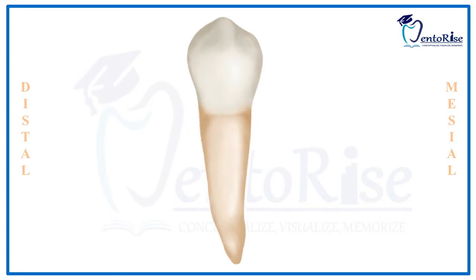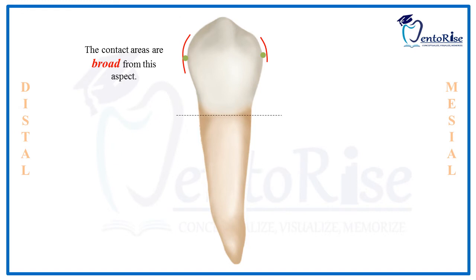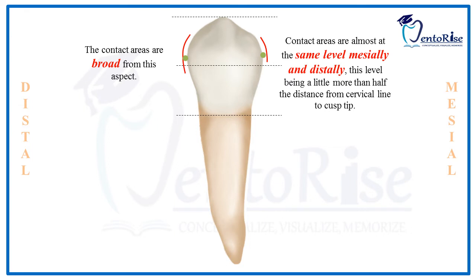From the buccal aspect, the contact areas of permanent mandibular 1st premolars are broad. They are located a little more than half the distance from the cervical line to the tip of the cusp. The mesial and distal contact areas are present almost at the same level.